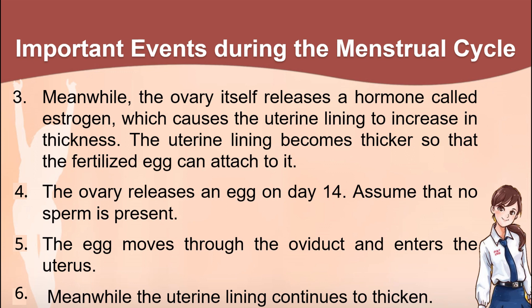3. The ovary releases a hormone called estrogen, which causes the uterine lining to increase in thickness. The uterine lining becomes thicker so that a fertilized egg can attach to it. 4. The ovary releases an egg on day 14. Assume that no sperm is present. 5. The egg moves through the oviduct and enters the uterus. 6. Meanwhile, the uterine lining continues to thicken.